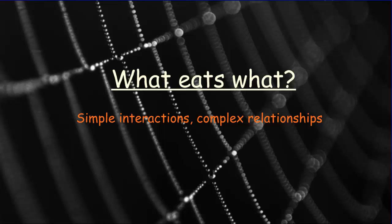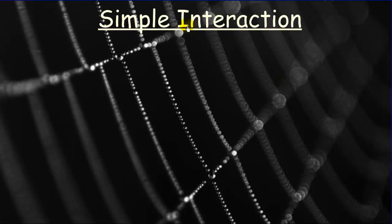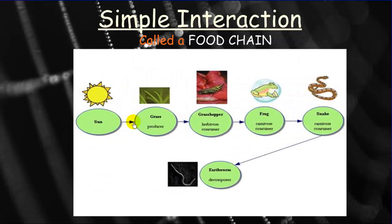We analyze the flow of energy within an ecosystem by asking the basic question: what eats what? There are simple interactions that lead to complex relationships. We call that simple interaction a food chain. A food chain, like any chain, has links — each link as important as the one it's connected to. If one link is missing, the whole chain falls apart.